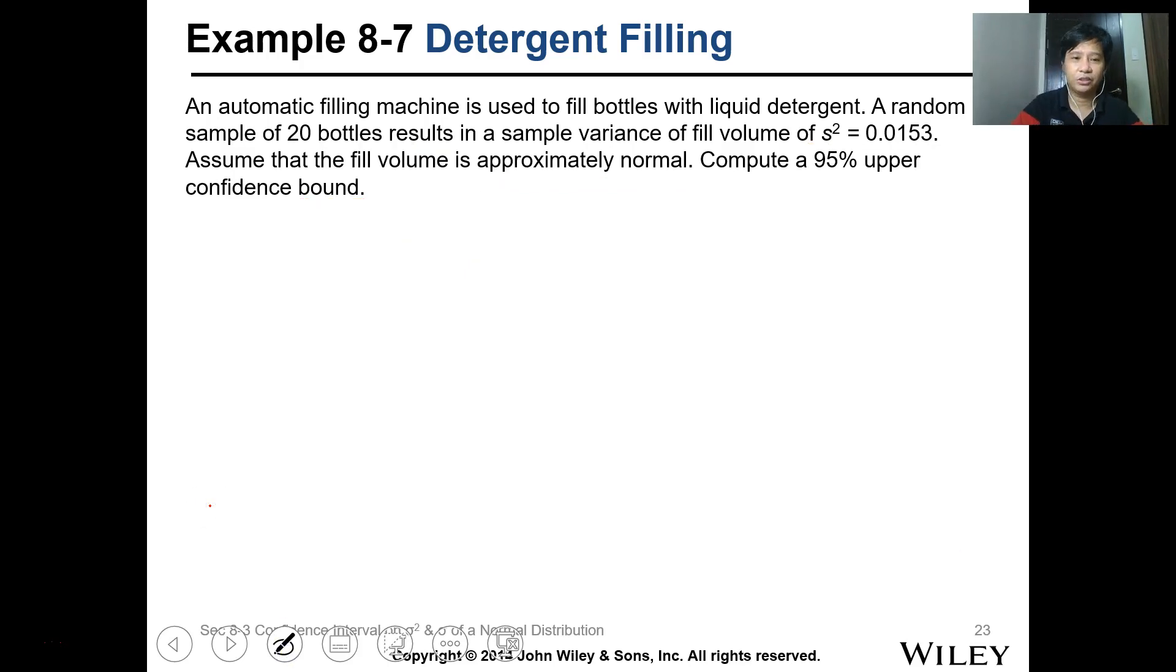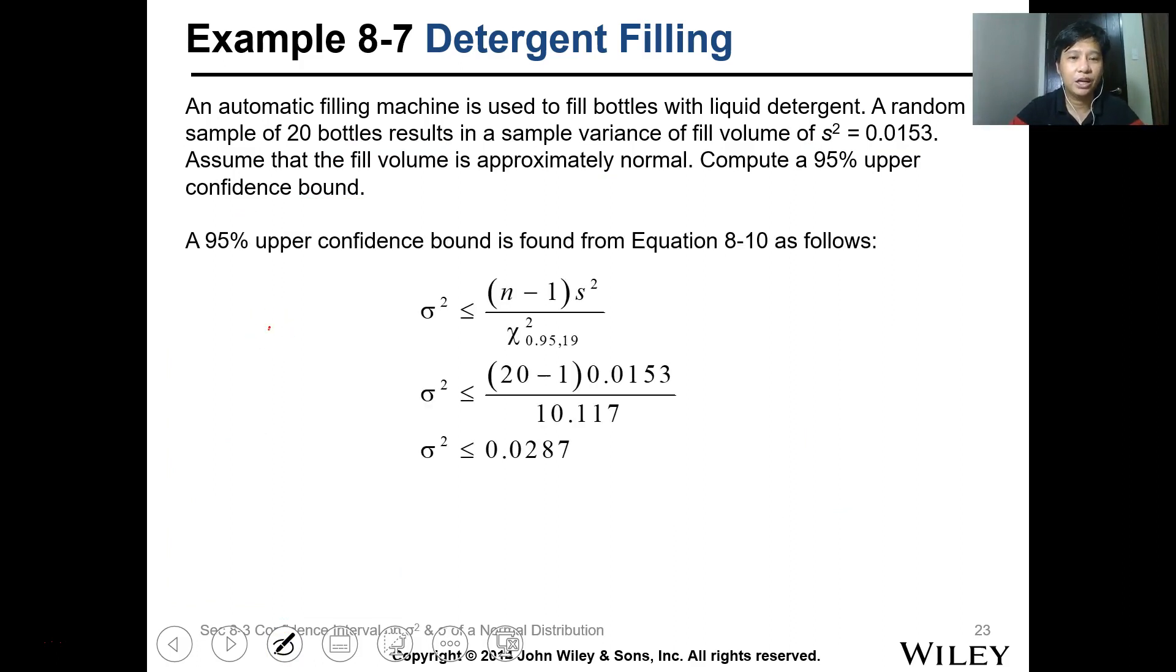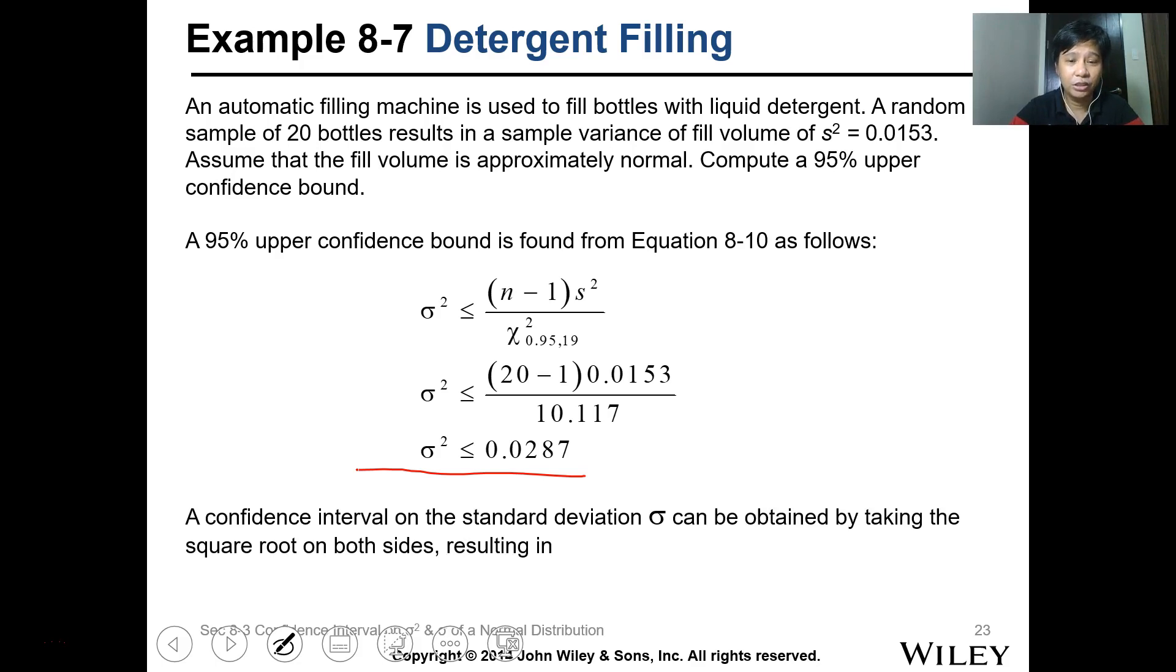Erase this. Approximately, the upper confidence interval is, this is it, n minus 1, 19. Then the variance, this. And this is the 10.12 or 10.117 value. We get the upper interval is less than 0.0287, upper confidence bound. For a confidence interval on the standard deviation, just take the square root of both sides. So this is square root of 0.70. We'll end here for the lesson.